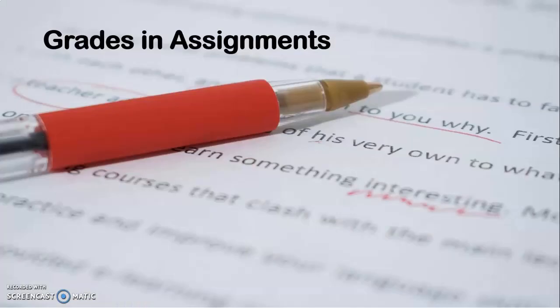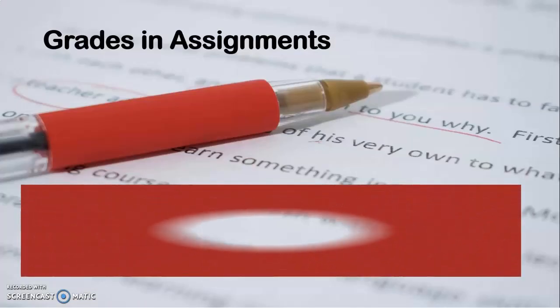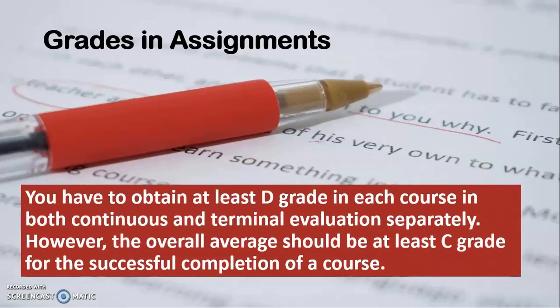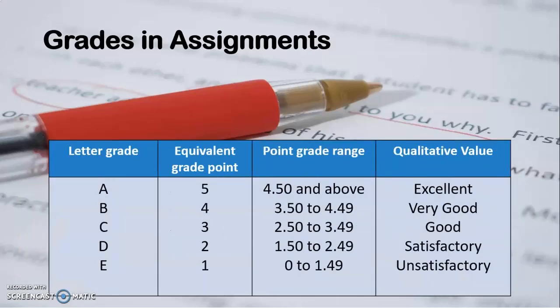Now, how is grading done in assignments? In School of Education programs, you need to obtain at least a D grade in each course in both continuous and terminal evaluation — that is, minimum D grade in theory and minimum D grade in assignment — but the total grade should be minimum C. In the case of BEd programs, it should be minimum C. The letter grades A, B, C, D and their corresponding percentages and grade points are given in a table.